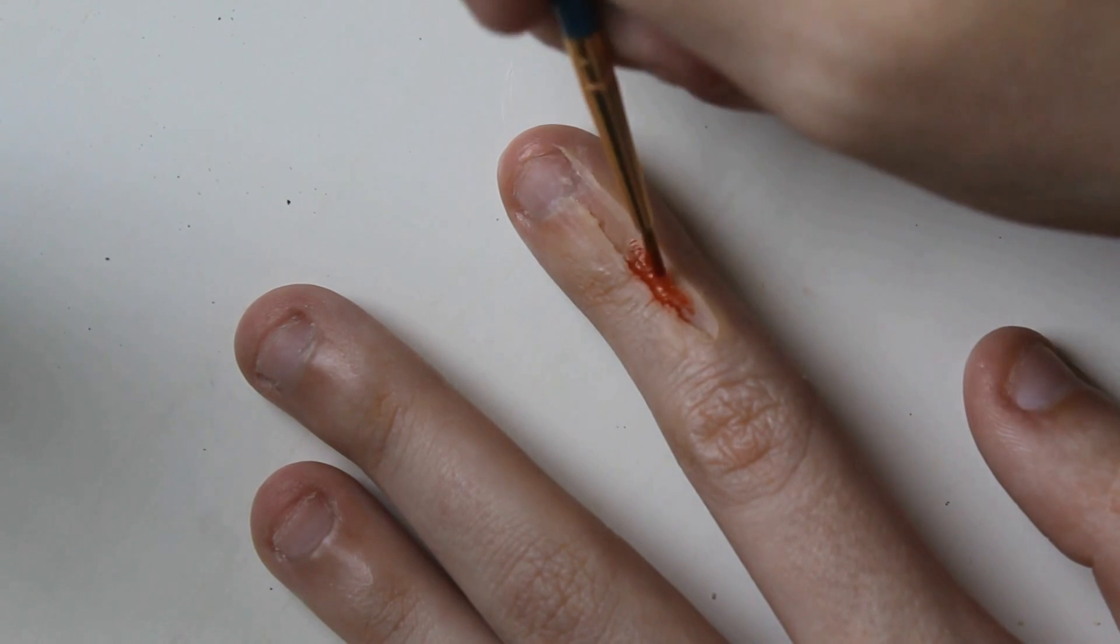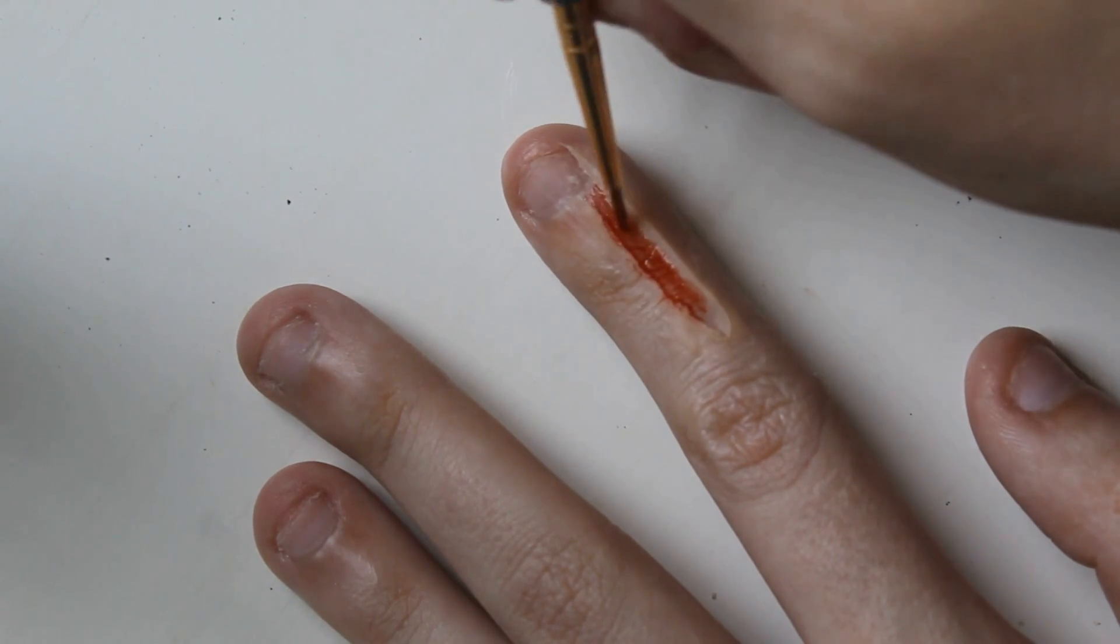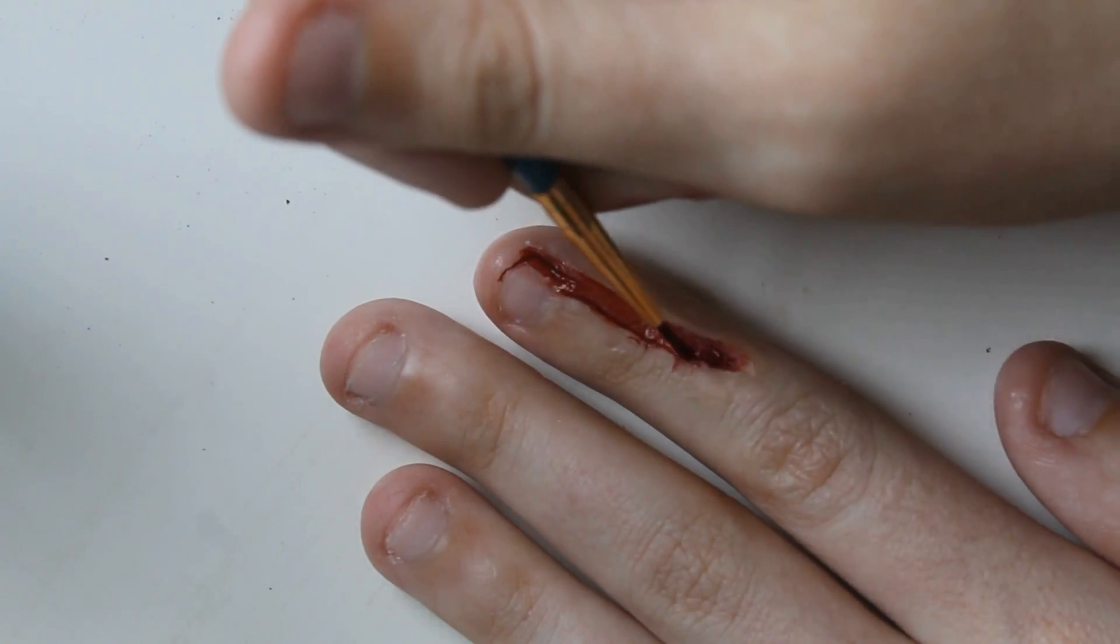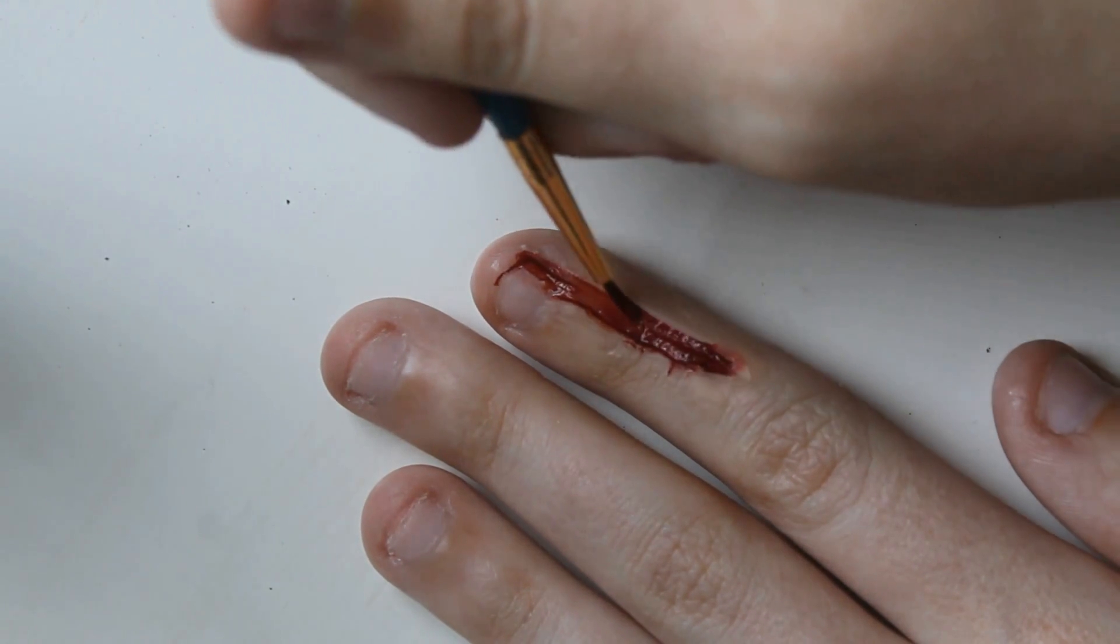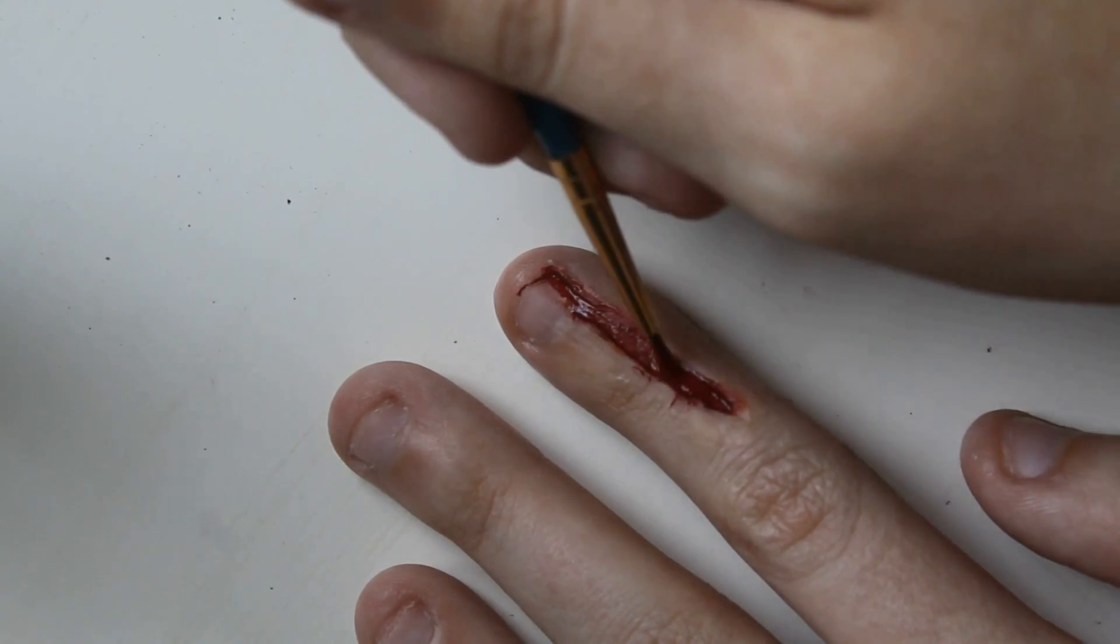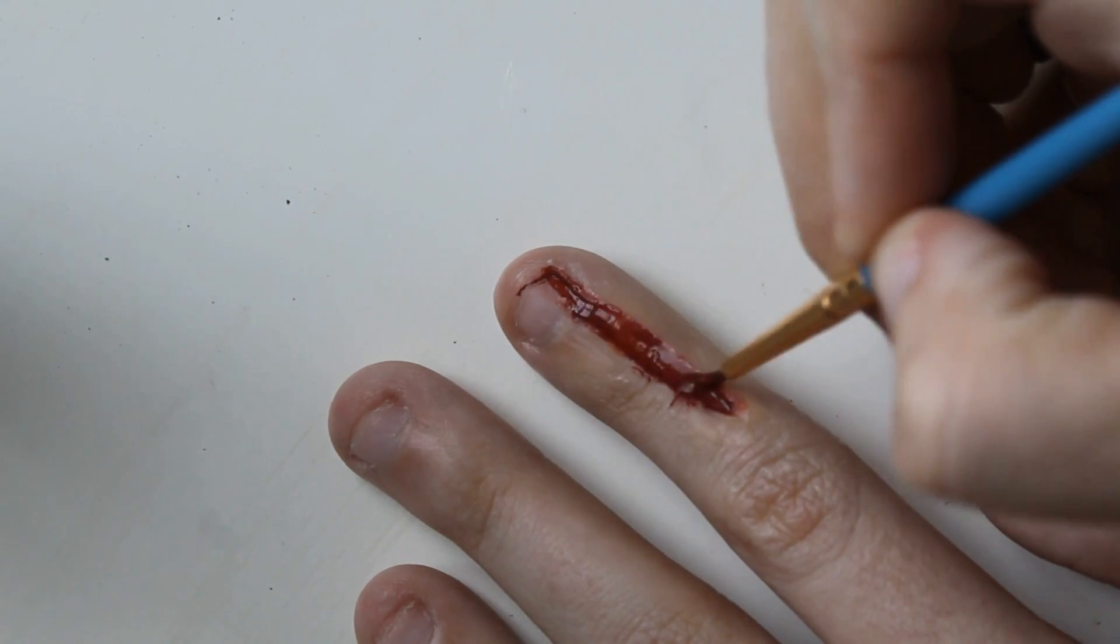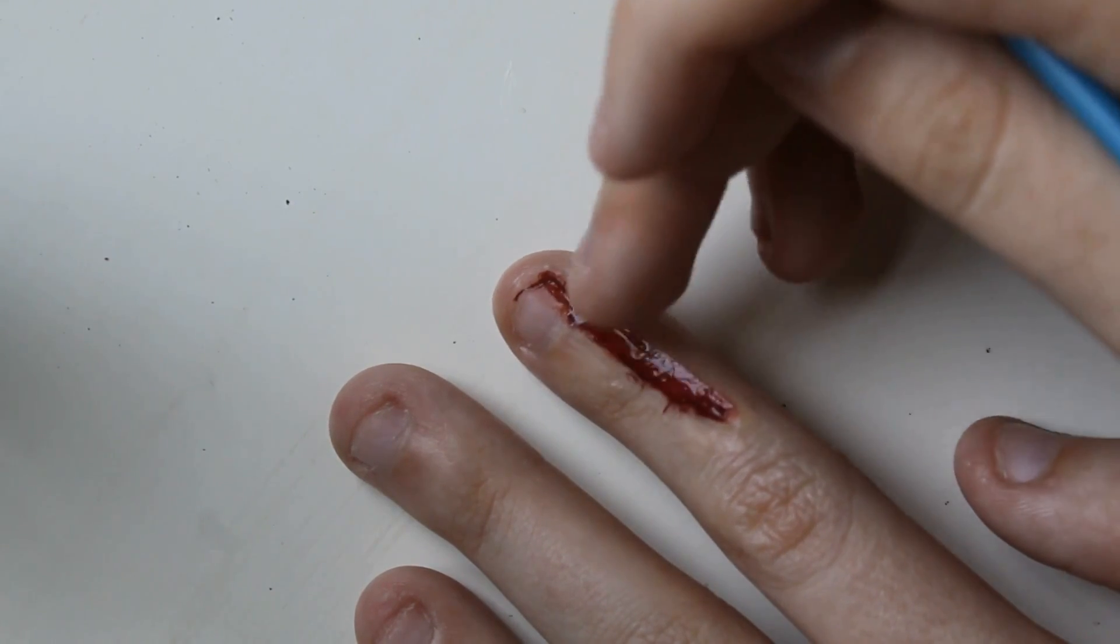I'm taking a bright red and a dark red alcohol-activated face paint and applying it in the center of the cut, not worrying too much about this because I'm going to put blood on top of it later.